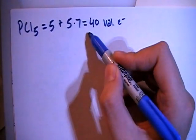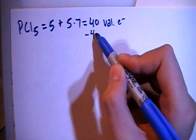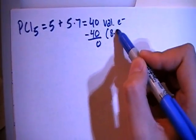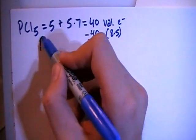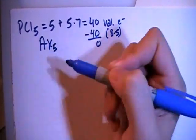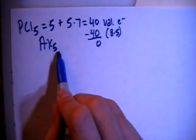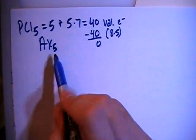We can subtract out the largest multiple of 8 out of the 40, which is also 40, giving us a remainder of 0, which is 8 times 5, meaning that this is an AX5 structure with a central atom and 5 peripheral atoms and no non-bonding pairs.